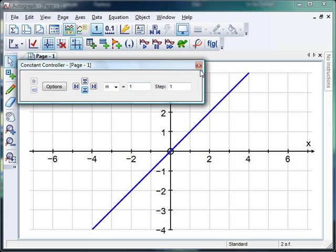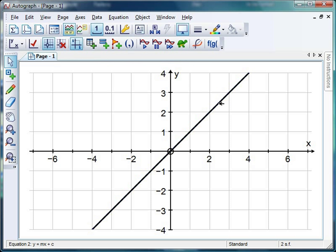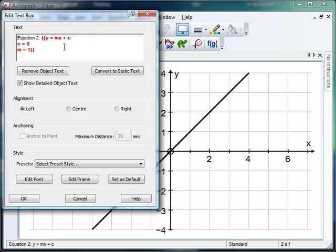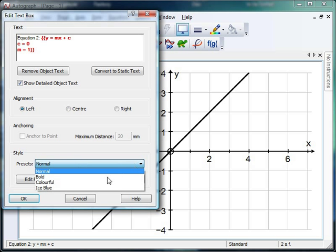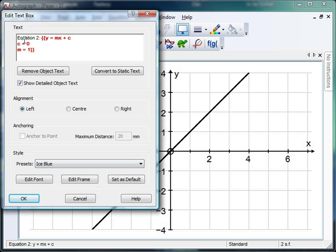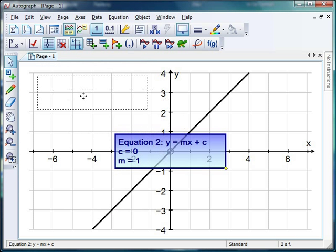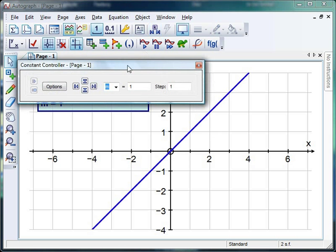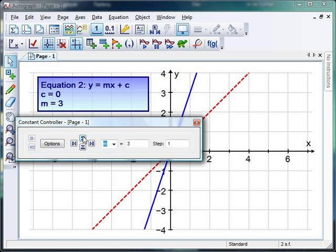If I want to keep a track of all these changes, if I just click on the line itself and I go to the text box then what I get now is a nice dynamic text box. I'm just going to make sure I'm in ice blue and Autograph keeps a track of the current value so if I click OK and now I start moving my constants, as the value of m changes this text box keeps a nice track of it.